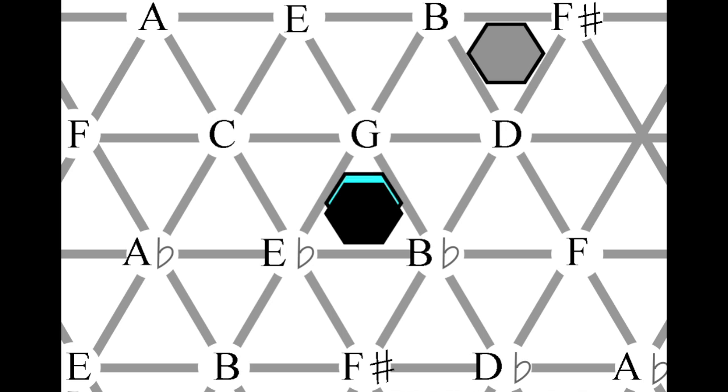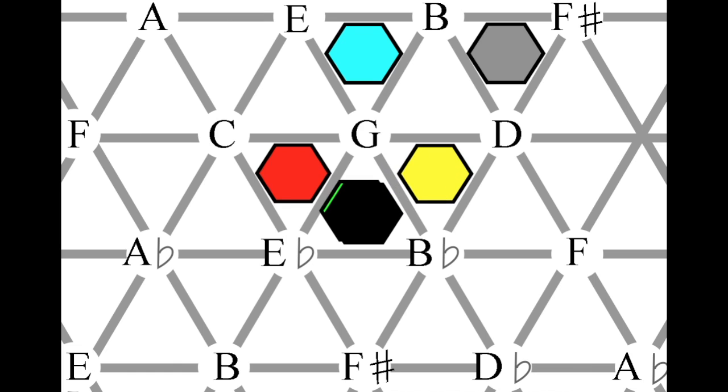However, one of the more uncommon ways of understanding chord relations is through neo-Riemannian transformations. In this video, we'll talk about what they are, how they are used, and if they can help us understand Jacob Collier's music.